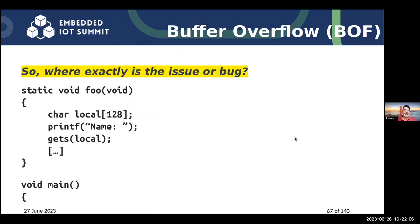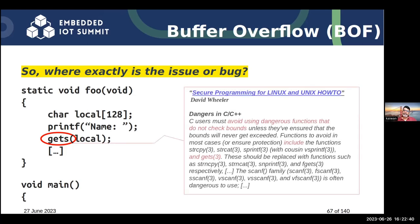The gets API is a very poorly written, very old API. Unfortunately this wasn't foreseen. Once APIs are written they're written in stone and they live forever because production code is using them even today. David Wheeler is a very famous security consultant — as far as I know he is with the Linux Foundation and was heading the OSSF at one point. He wrote this free open source book. He says: C users must avoid using dangerous functions that do not check bounds — and gets is one of them.